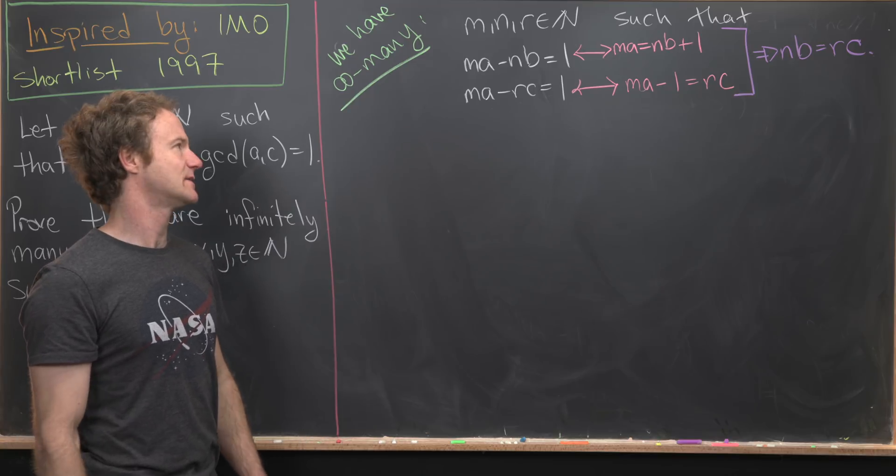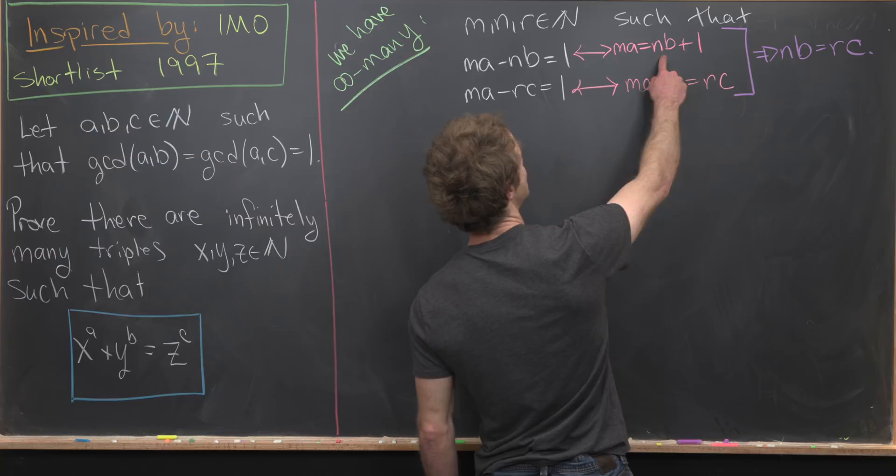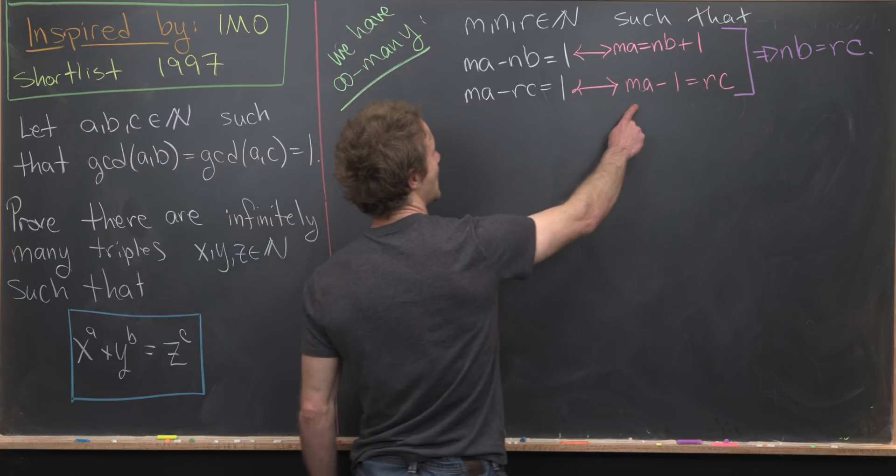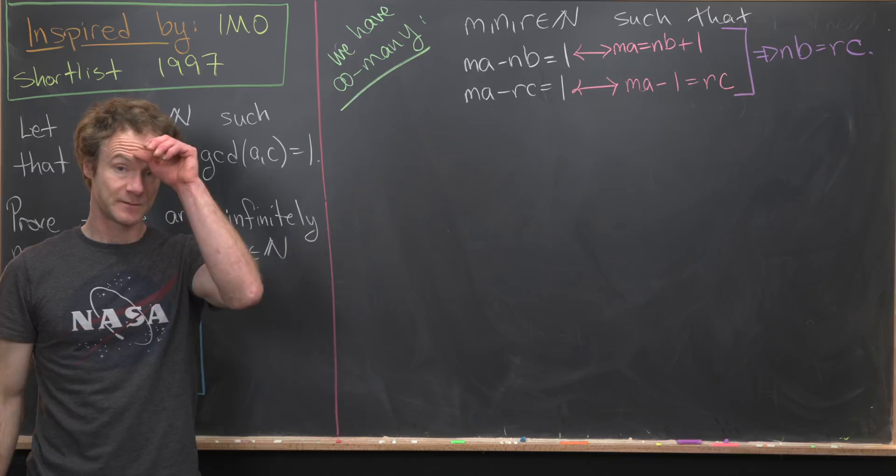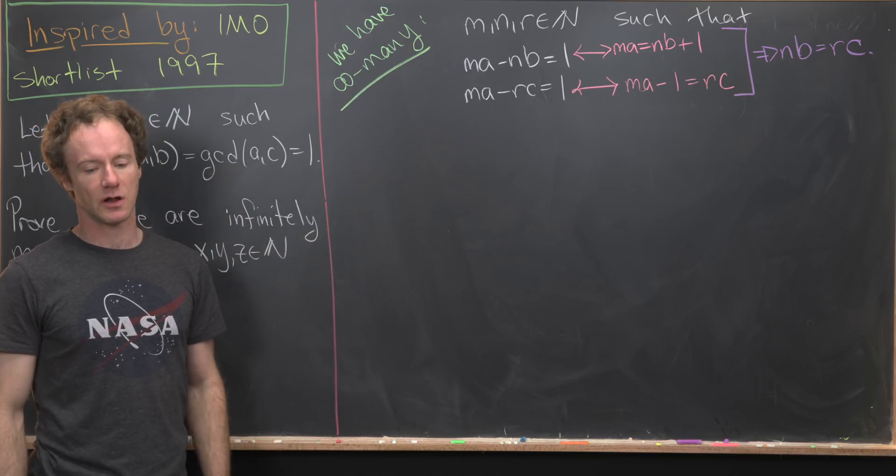So by just simple arithmetic, that's the same thing as saying that MA is equal to NB plus 1, and MA minus 1 is equal to RC. Furthermore, we know that NB is equal to RC, kind of putting all of this together.